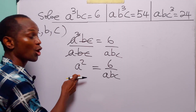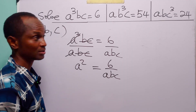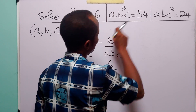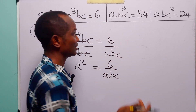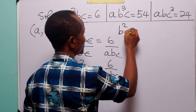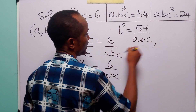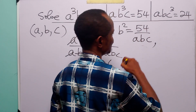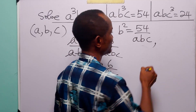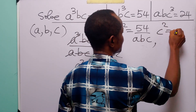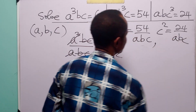To find A, all we have to do is take the square root of both sides of this equation. Likewise, in the second equation, if we divide both sides by A times B times C, we have that B squared is equal to 54 over A times B times C. And in the third equation, if we divide both sides by A times B times C, we have that C squared is equal to 24 over A times B times C.